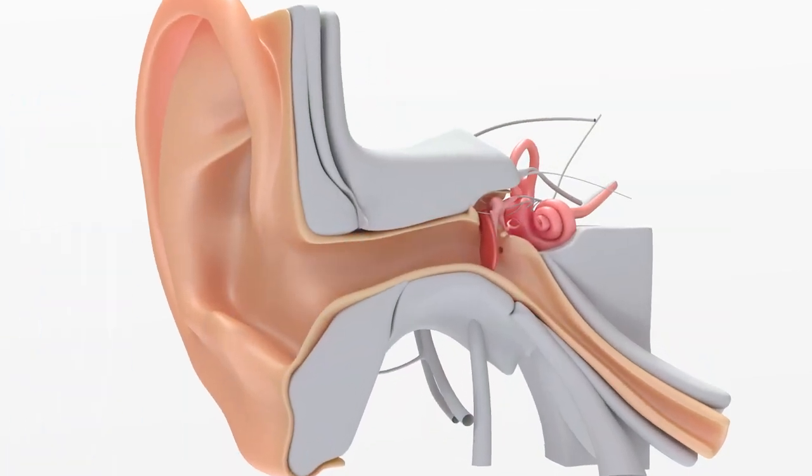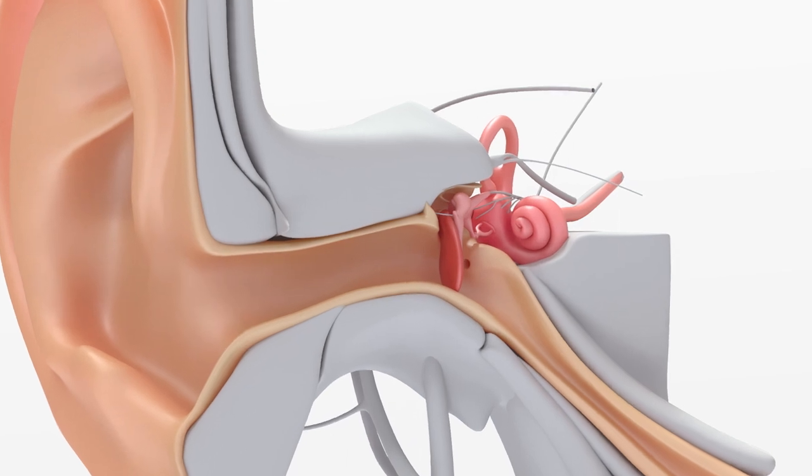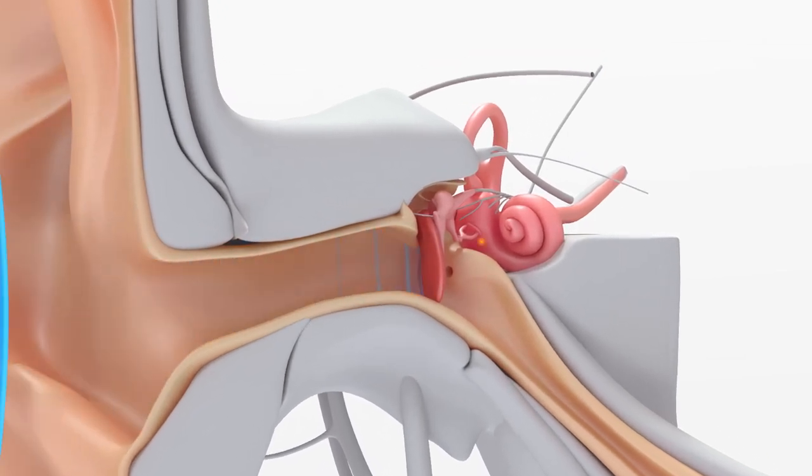When sound waves hit the eardrum, it vibrates and causes the linked bones to move, passing sound waves to the inner ear. Signals will be sent through the hearing nerves to the brain, allowing us to hear.